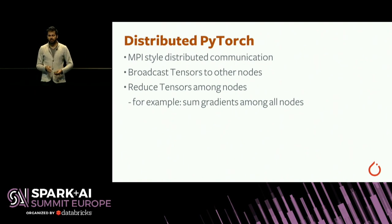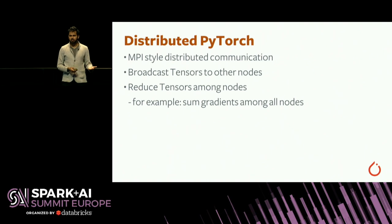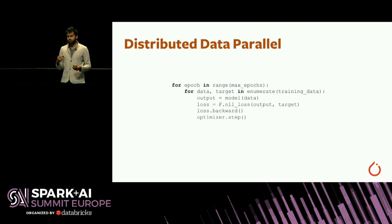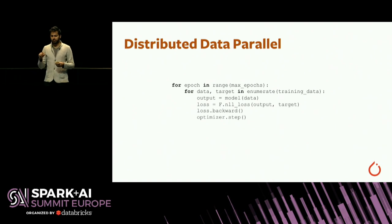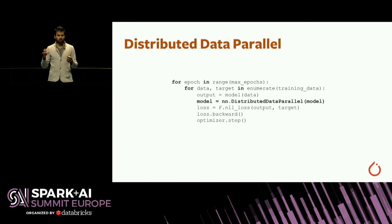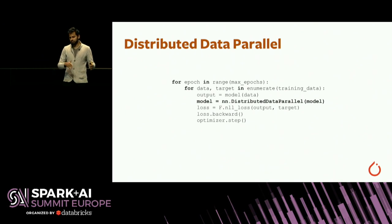PyTorch also has a highly scalable distributed backend, so you can scale your neural network training to multiple GPUs and multiple machines, with a lot of time spent optimizing for high performance. We provide what we call distributed data parallel — to use it you just make a one-line change, wrapping your model in a container called nn.DistributedDataParallel, and then your model is parallelized over as many machines as you want. The input will be sharded over all those machines for parallelizable compute.